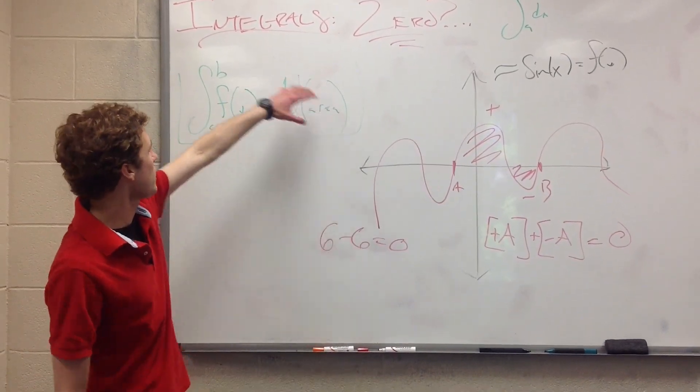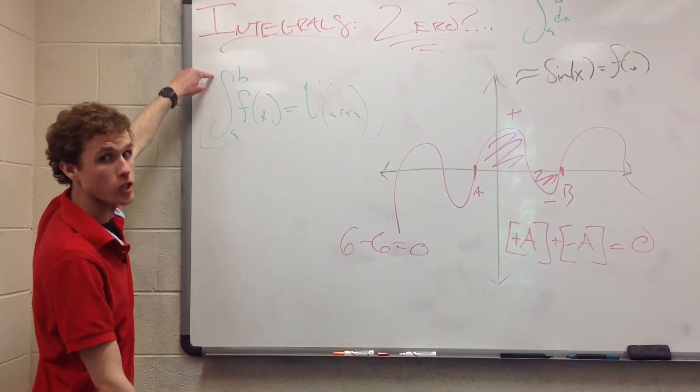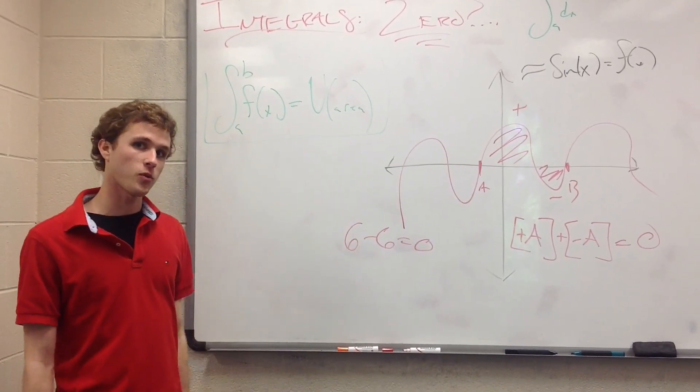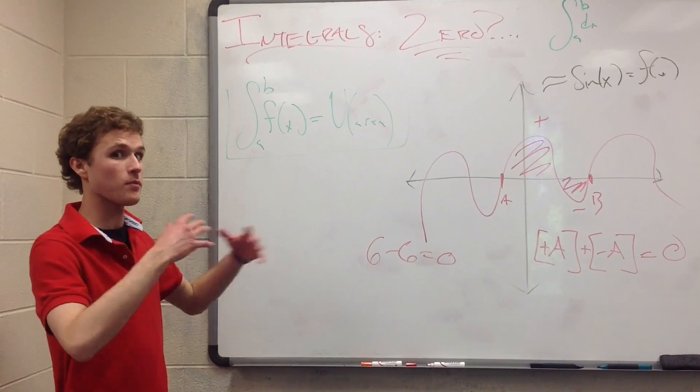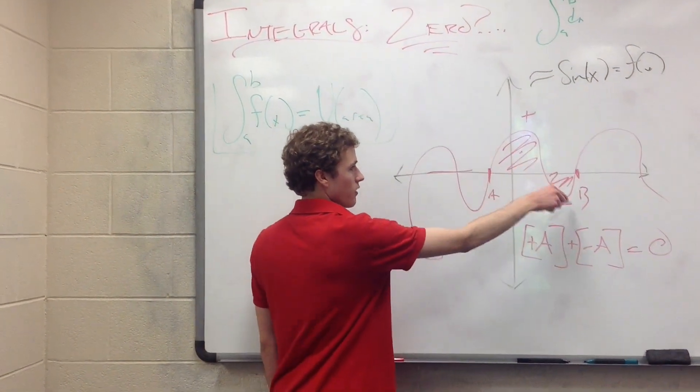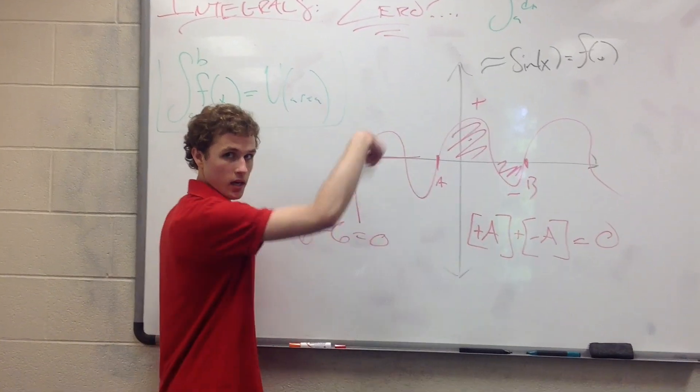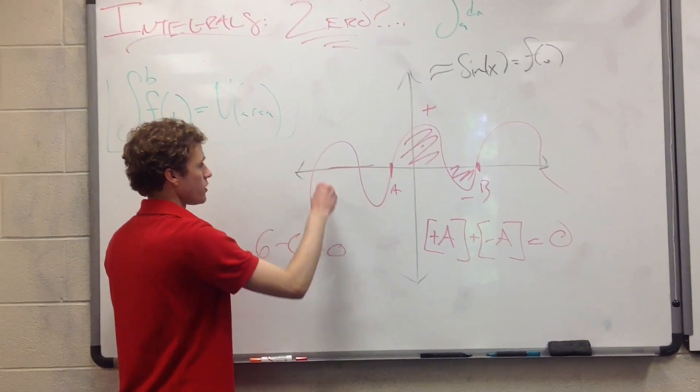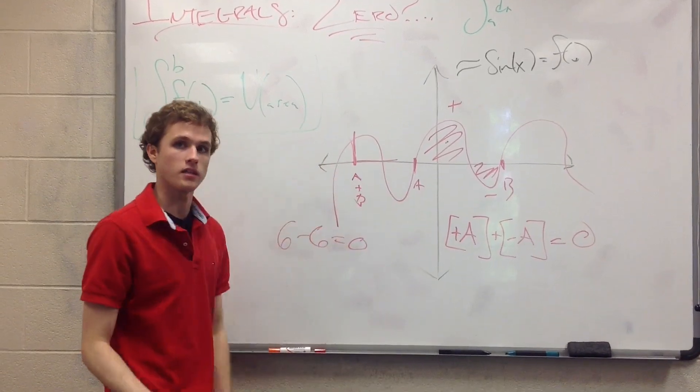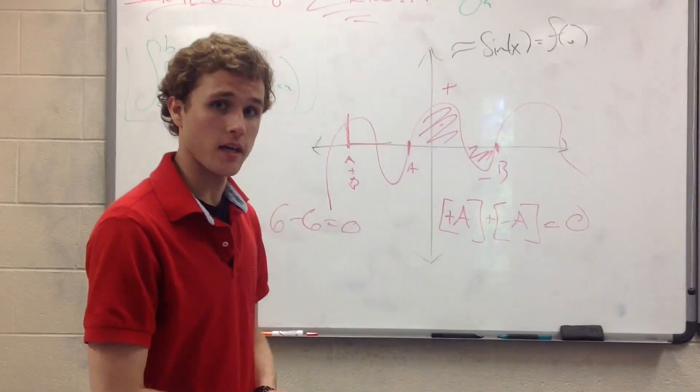So, to quick recap, definite integral takes a function over an interval, spits out a value that shows how much area is in between there. There are three ways that we talked about in which it can be equal to zero. A straight line on your function, negative area and positive area canceling each other out, or just having your point A and B equal to one another, causing a straight line with no area in between. There you go. That's it.